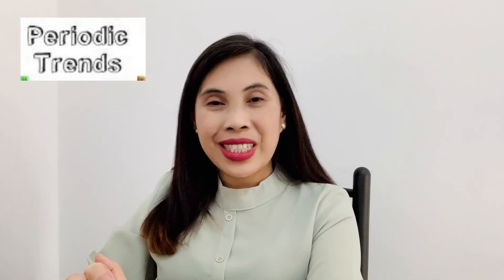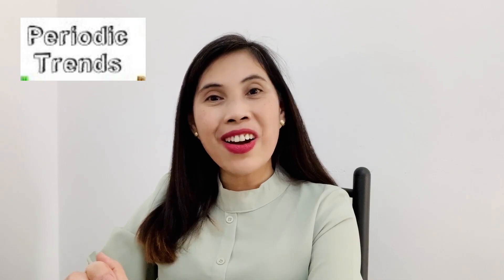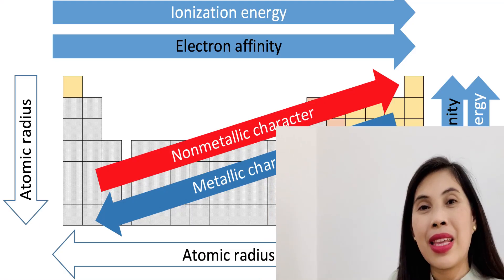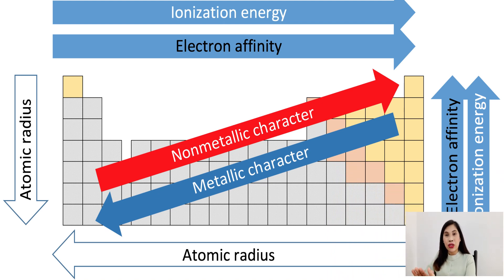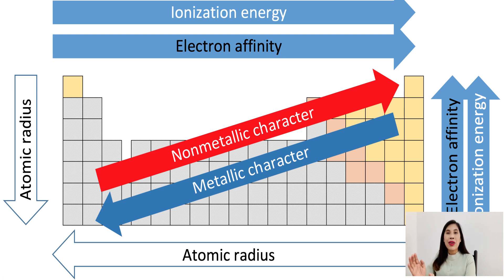The next one is the periodic table trends. There are six trends in the periodic table: ionization energy, electron affinity, electronegativity, non-metallic property, metallic property, and atomic radius. Of all these trends, only two have an increasing property from right to left and from top to bottom — these are the atomic radius and the metallic property.